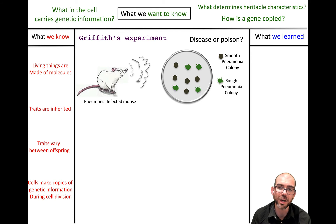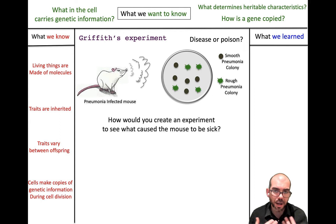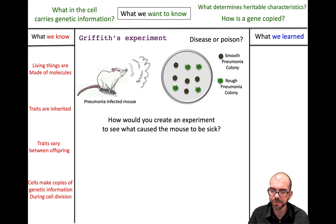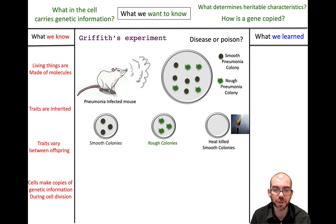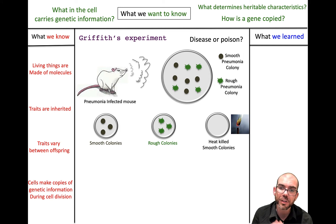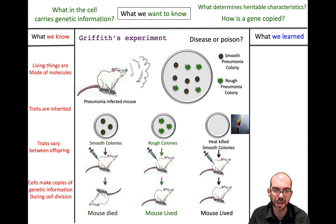Thinking back to Griffith's question — is it the disease or the poison causing death — Griffith separated the smooth and rough colonies, and in a third group he heat-killed the smooth colonies. If you kill the bacteria, any poison would still remain in the sample but the bacteria would be dead, which could conclusively prove whether it was poison causing illness. He took these three samples, injected them into three different rats, and observed the results.